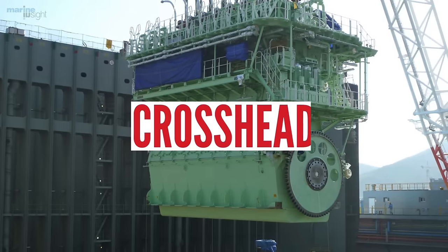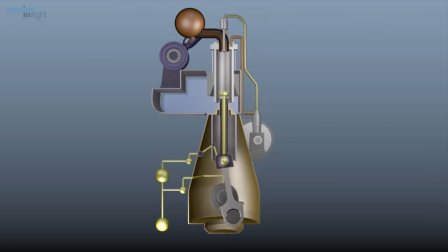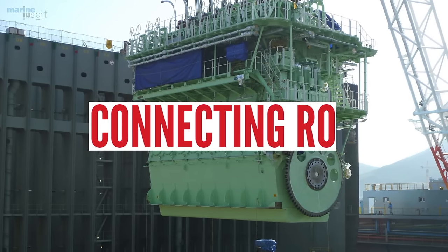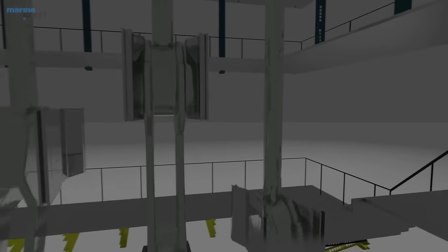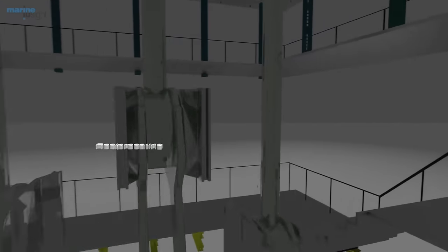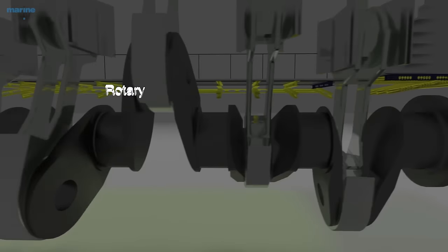Crosshead: A reciprocating block which usually slides in guides and is the connecting point for piston rod and the connecting rod in a low-speed two-stroke diesel engine. Connecting rod: The connecting rod is fitted between the crosshead and the crankshaft. It transmits the firing force and together with the crankshaft converts the reciprocating motion to a rotary motion.